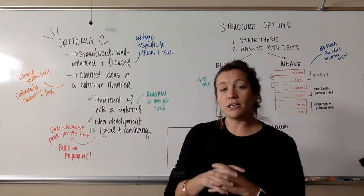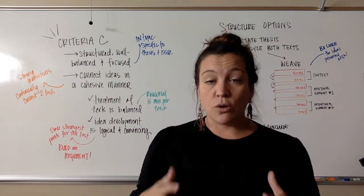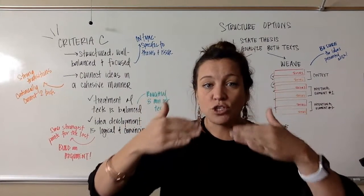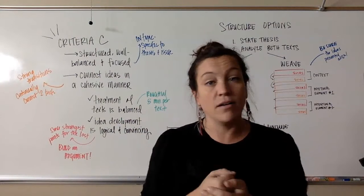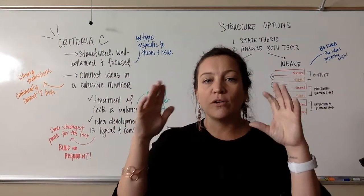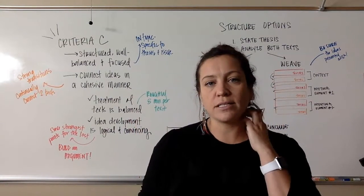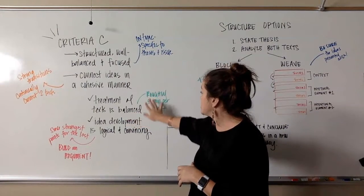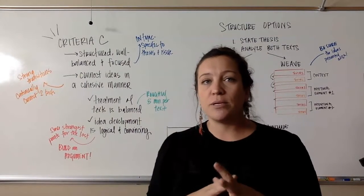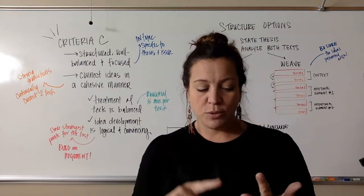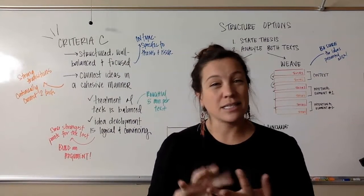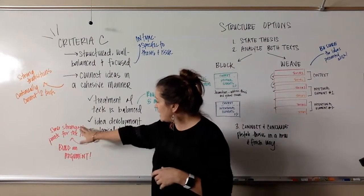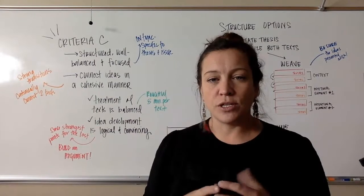Additionally, your idea development should be logical and convincing. Remember, you're building an argument — so you want to start with your least impactful ideas and eventually work into those details that are the real home hitters, the ones that are really going to prove your point. Those should come later so that as you move through your analysis, you become more and more convincing. You want to spend roughly four to five minutes per text, since transitions and your thesis restatement will take about a minute, and you've got ten minutes total.